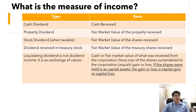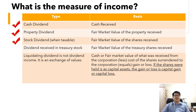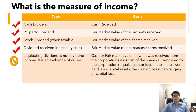As a stockholder and taxpayer, what is the basis for the 10% tax rate for dividends? For cash dividends, it's the amount of cash received. For property dividends, it's the fair market value of the property received. For stock dividends, if taxable, it's the fair market value of the shares received. For dividends received in treasury stock, it's the fair market value of the treasury shares received.